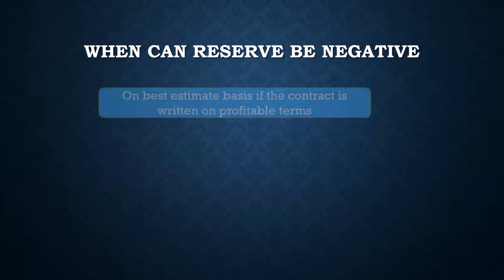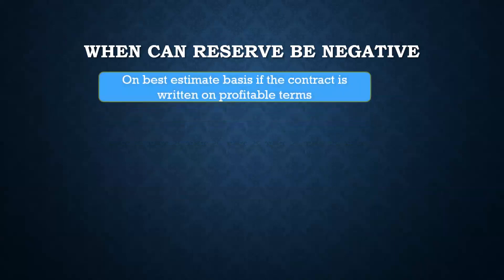So when can the reserve be negative? Reserve can be negative on a best estimate basis. The only reason reserve is positive is because in IFRS 4 or in Solvency 1, we have used a prudent basis to reserve — that is the common concept, and even our materials are written on the prudent concept. So if we are calculating reserve on a prudent basis, then we add some margins to the liabilities — to negative cash flows like death benefit, we add some margins; to expense, we add some margin. Because of that margin, the expected present value of benefits would increase and the expected present value of expense would increase. And we are not adding any margin to the premium — so only the negative cash flows are increasing while the positive cash flows are kept the same. That is where reserve would come out to be positive on a prudent basis.